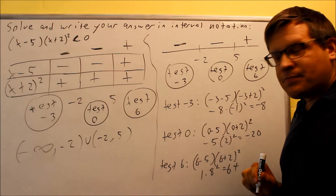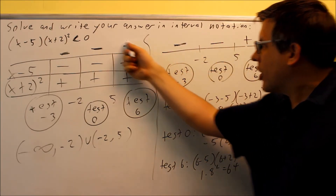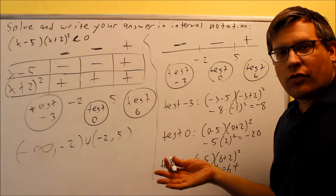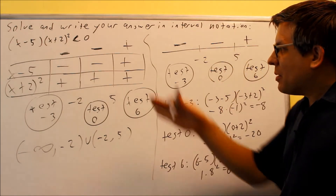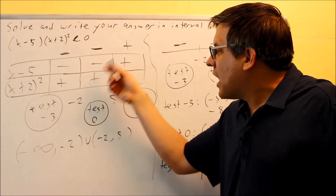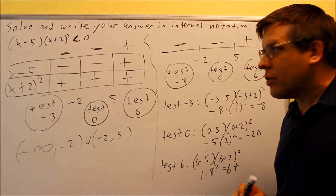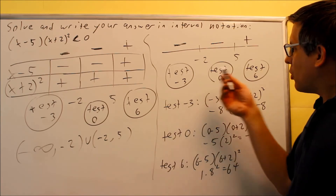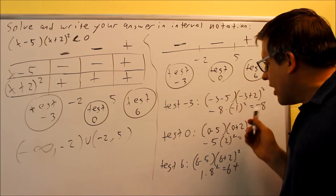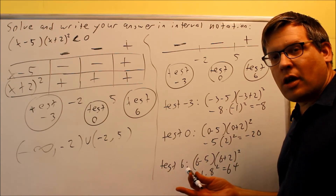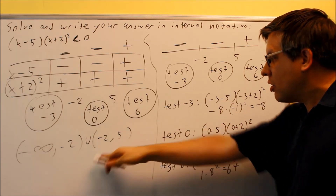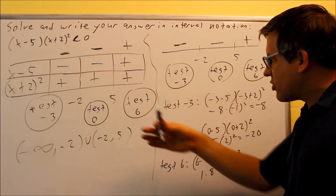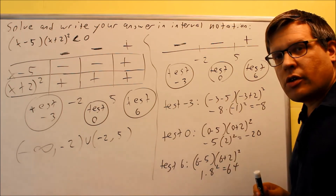Both methods produce the same sign configuration and therefore the same answer — they just involve different amounts of writing. Some people prefer the number line method because there's less to write out and you get the final sign configuration all at once, reducing chances for arithmetic errors. Both are acceptable; use whichever is most comfortable for you.